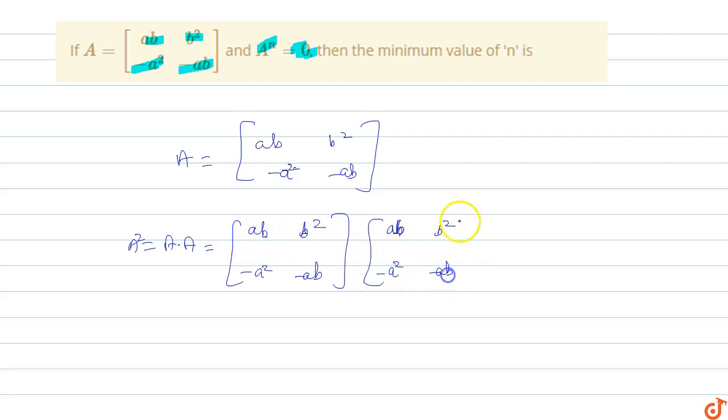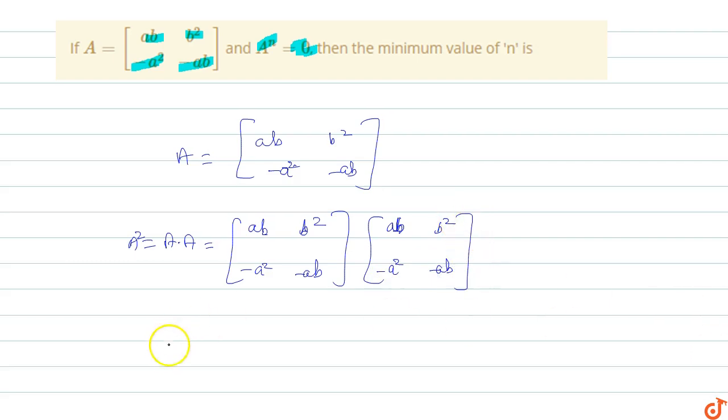A² matrix: first element is ab times ab plus b² times -a², which equals a²b² minus a²b². Now multiply this row with this column: -a² into ab, which is -a³b, minus ab times -a², so this is plus a³b.